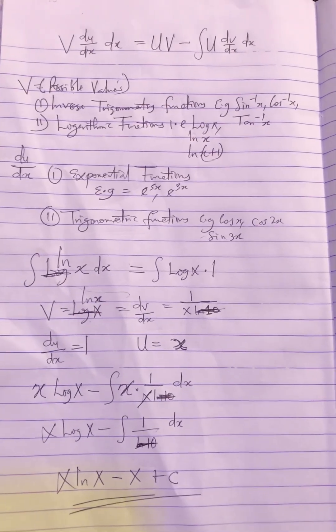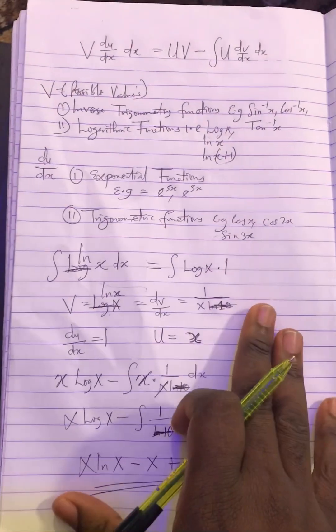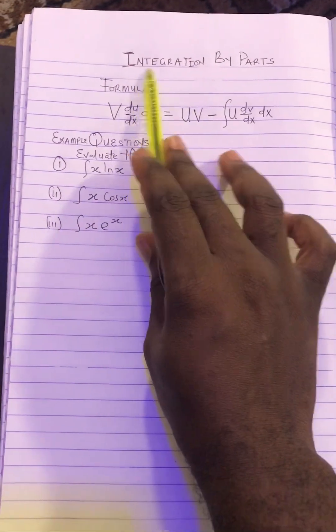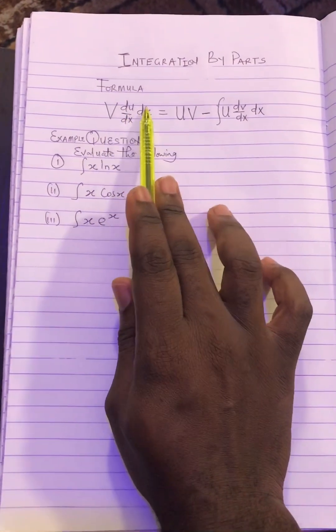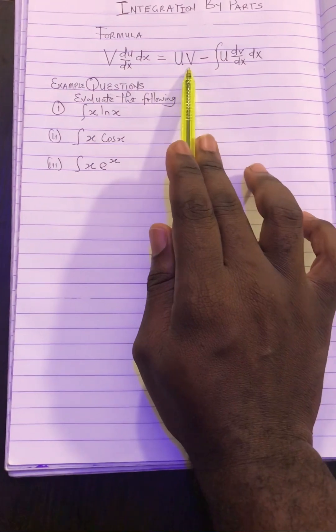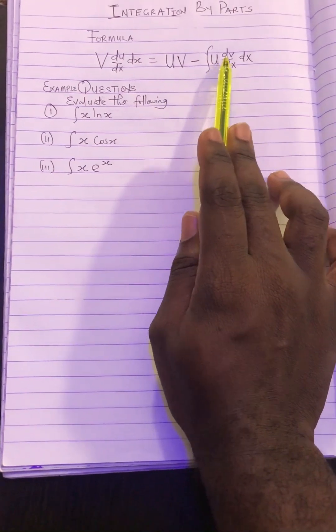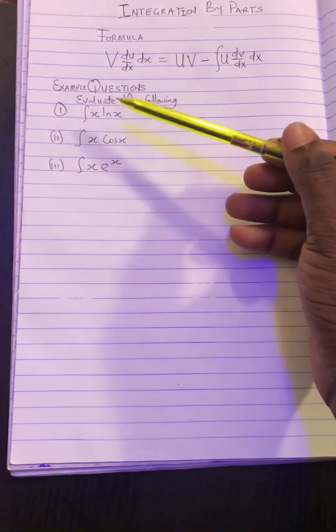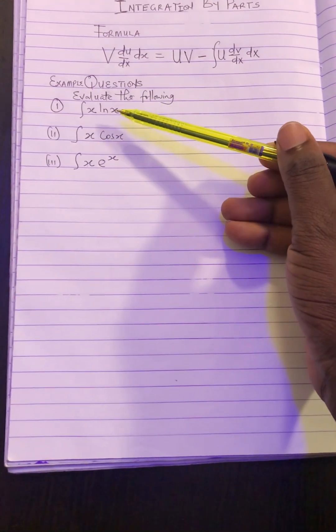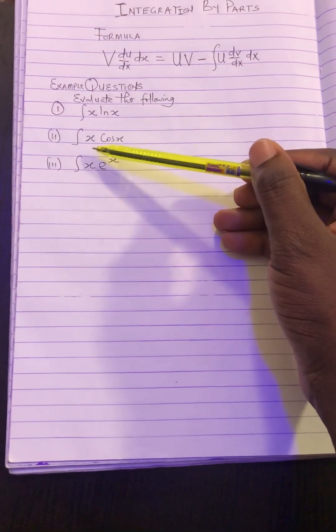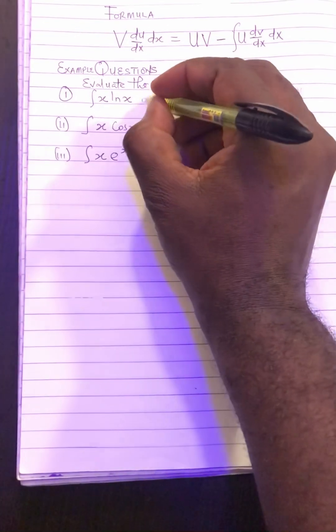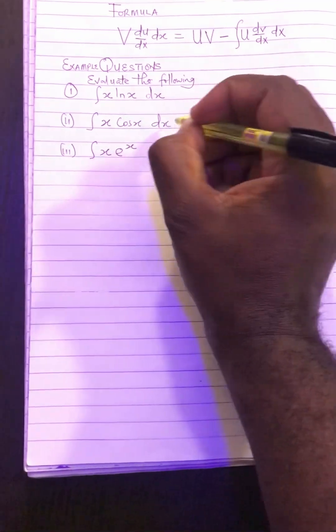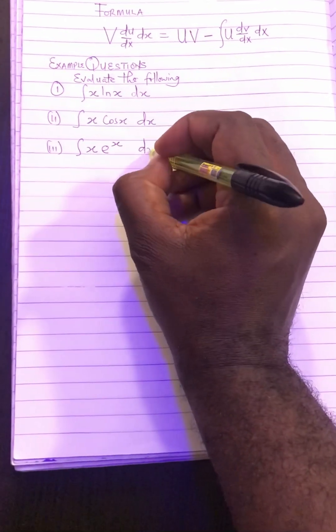Good afternoon everyone, welcome. I believe you must have watched my last video where I was introducing integration by parts. The formula we're using is ∫v (du/dx) dx = uv − ∫u (dv/dx) dx. We're going to treat three examples: ∫x ln x dx, ∫x cos x dx, and ∫x e^x dx.